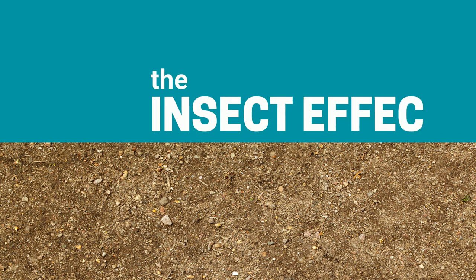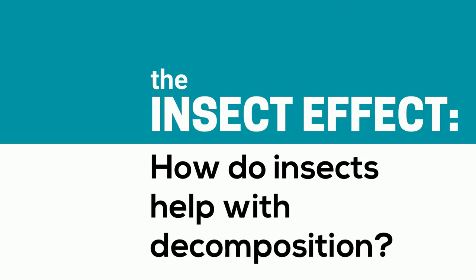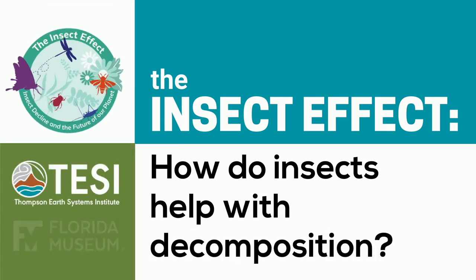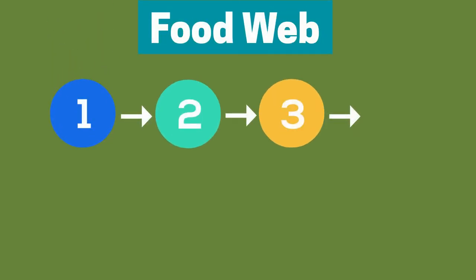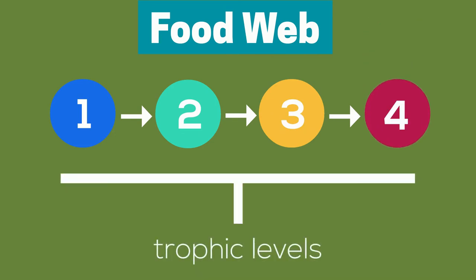Welcome back to another insect effect video. We're going to talk about the important roles insects play in decomposition and nutrient recycling. To understand these concepts, let's start off by talking about food webs. Food webs identify relationships within an ecosystem and trace energy flow between each position in the web, creating trophic levels.